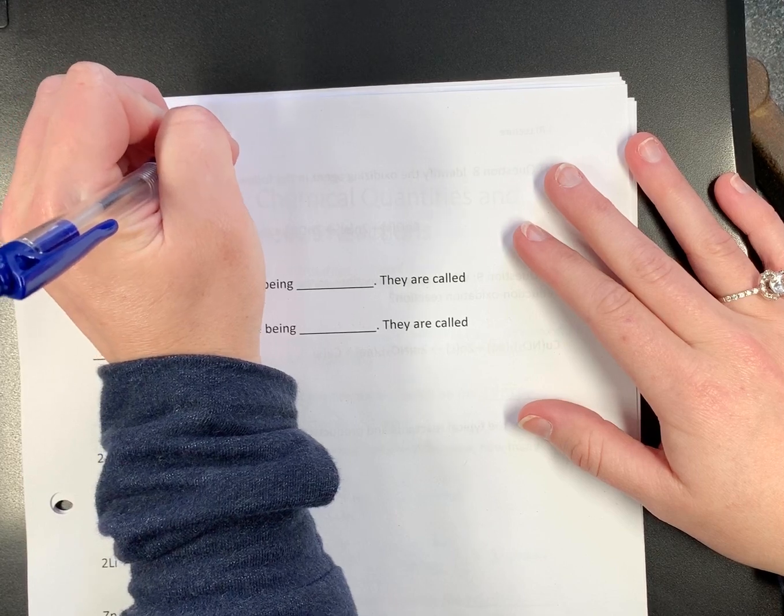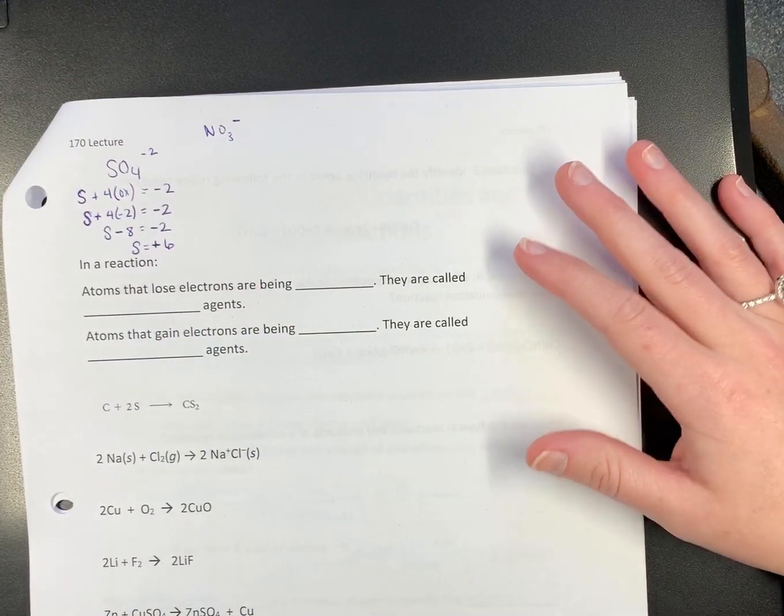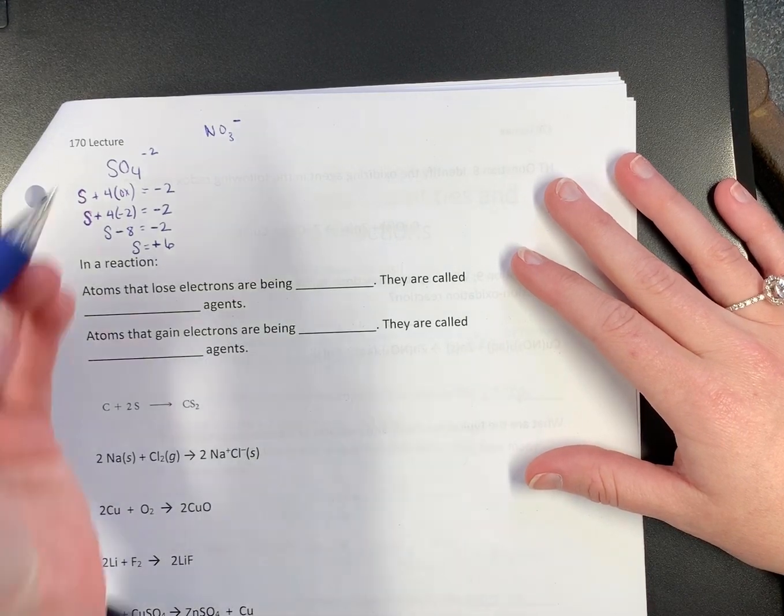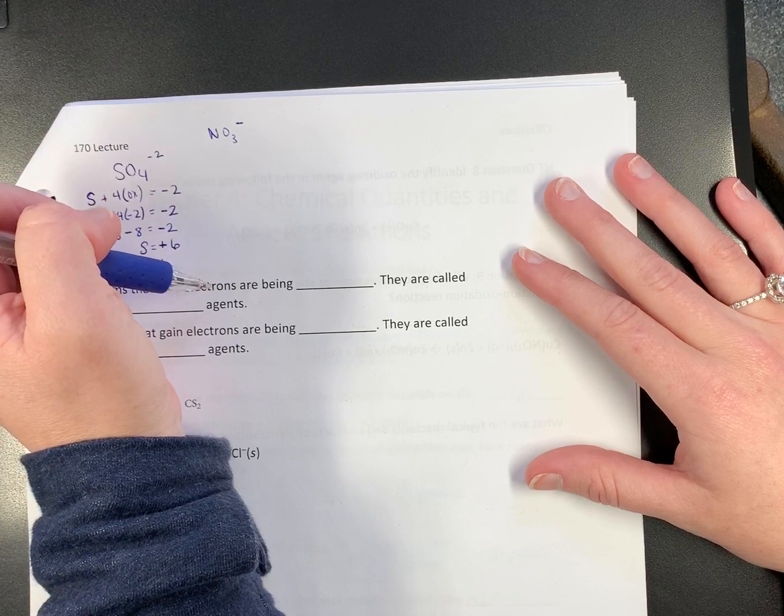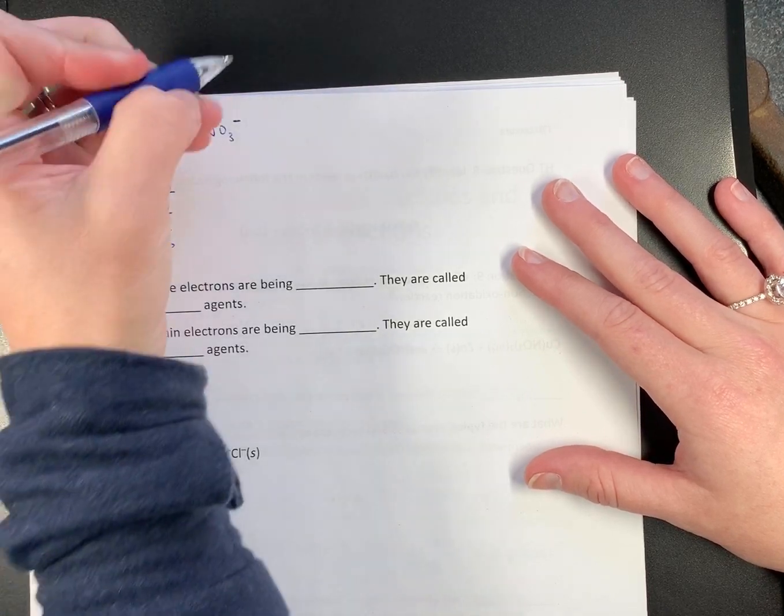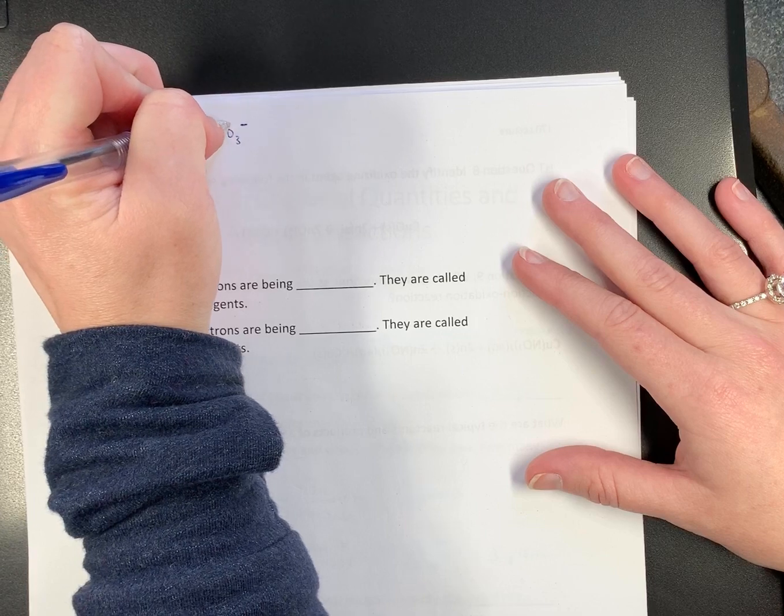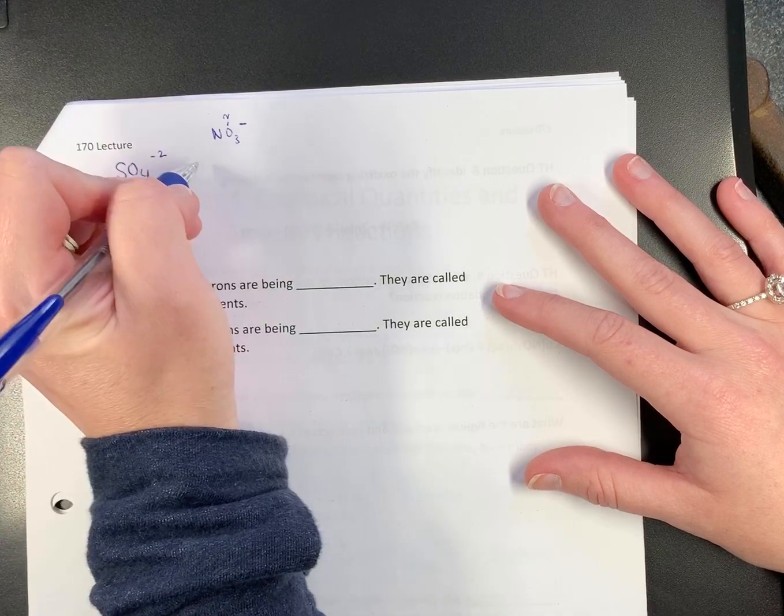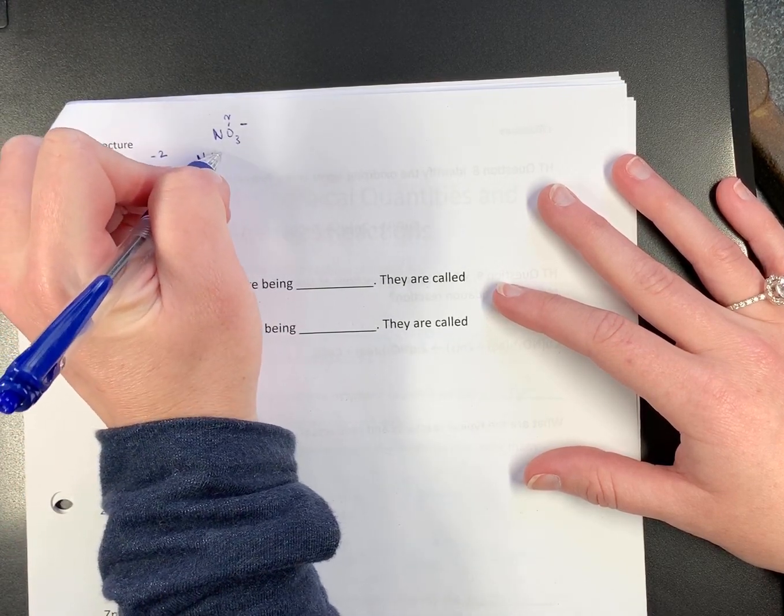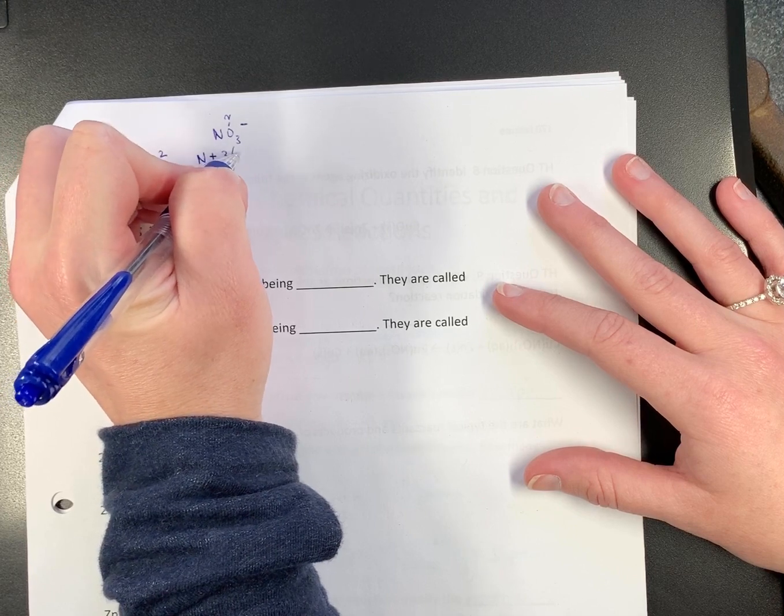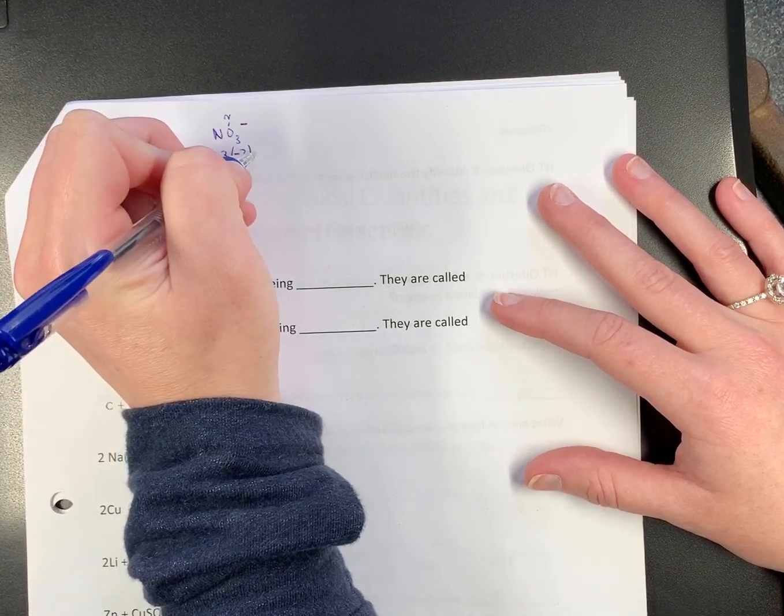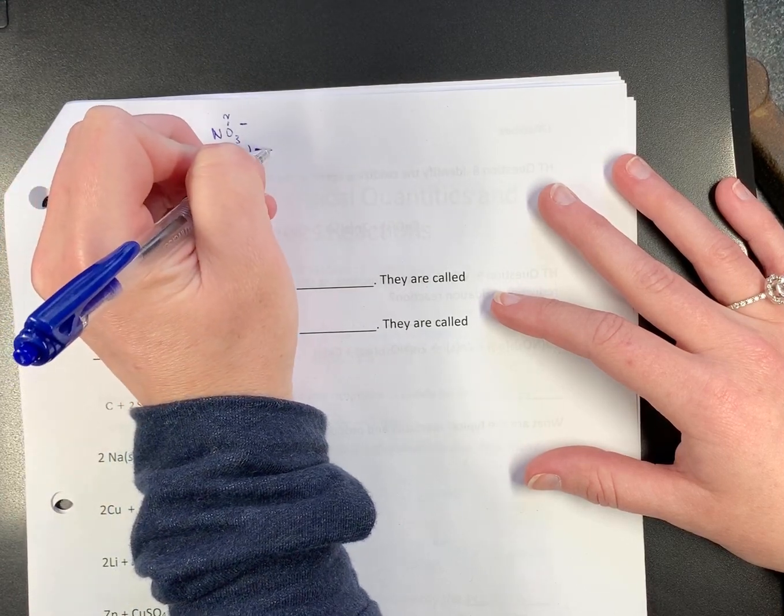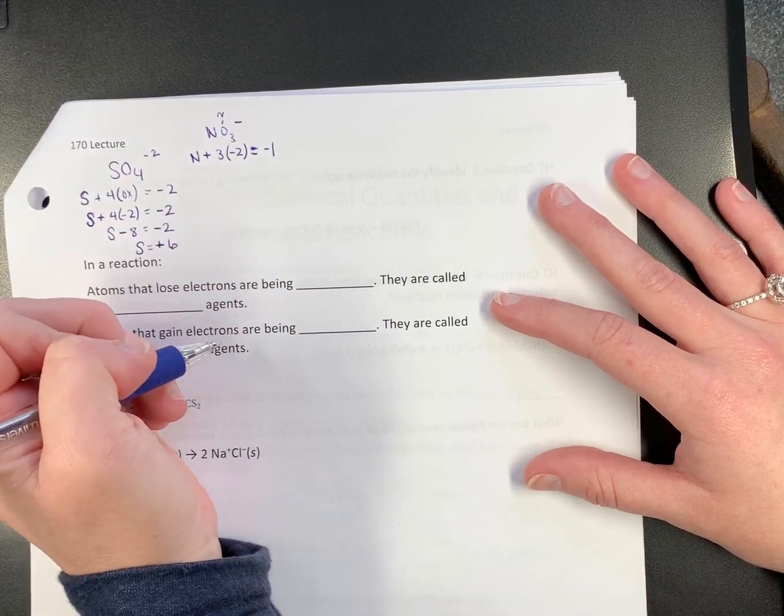Let's do NO3 minus 1. So this is nitrate. Same thing. You go through the rules. And the first one on the table you get to is oxygen. And oxygen is negative 2. So let's set up our little equation. We know that nitrogen plus 3 times however many oxygens we have equals... What is it equal to? What's the total charge? Negative 1.